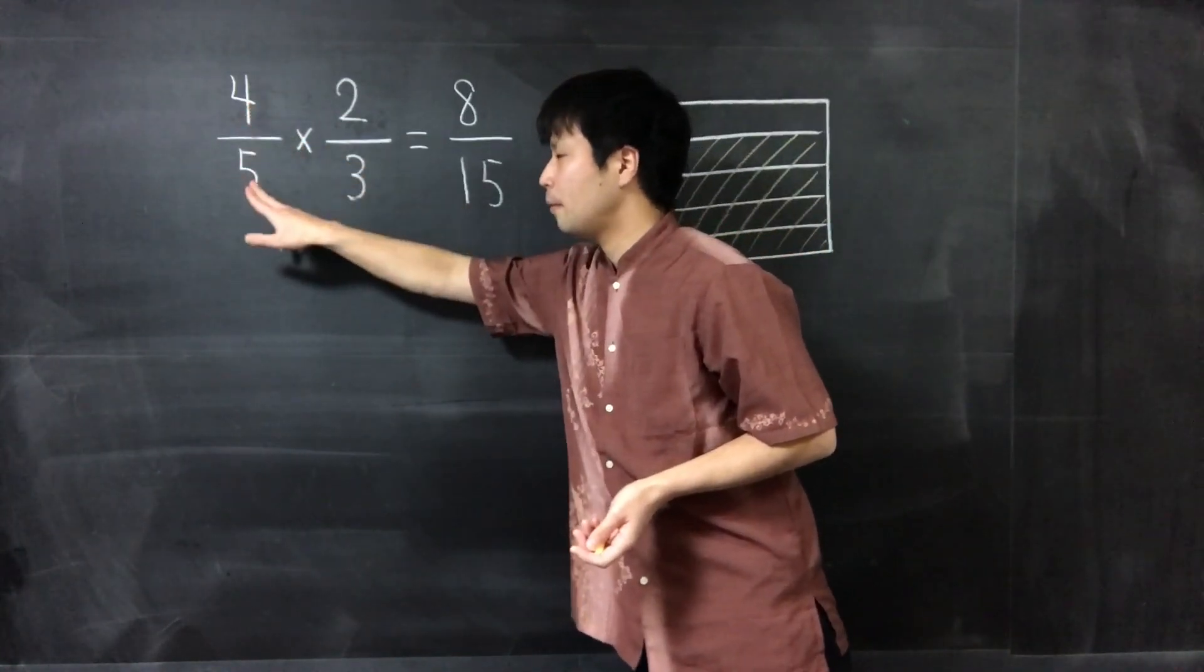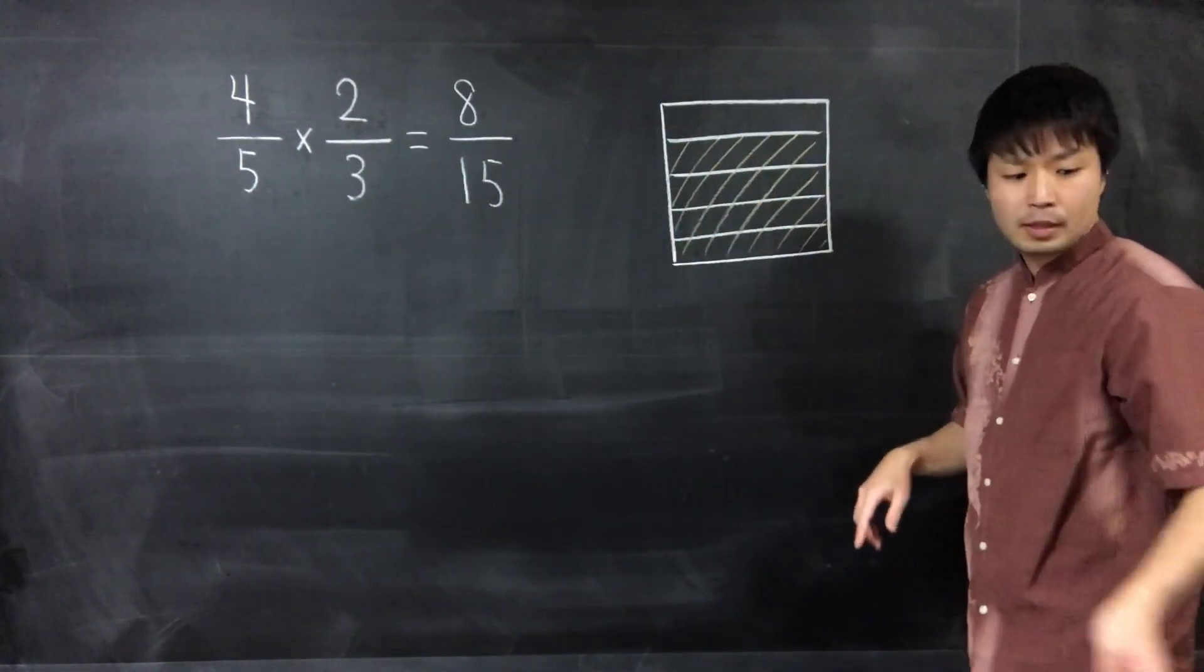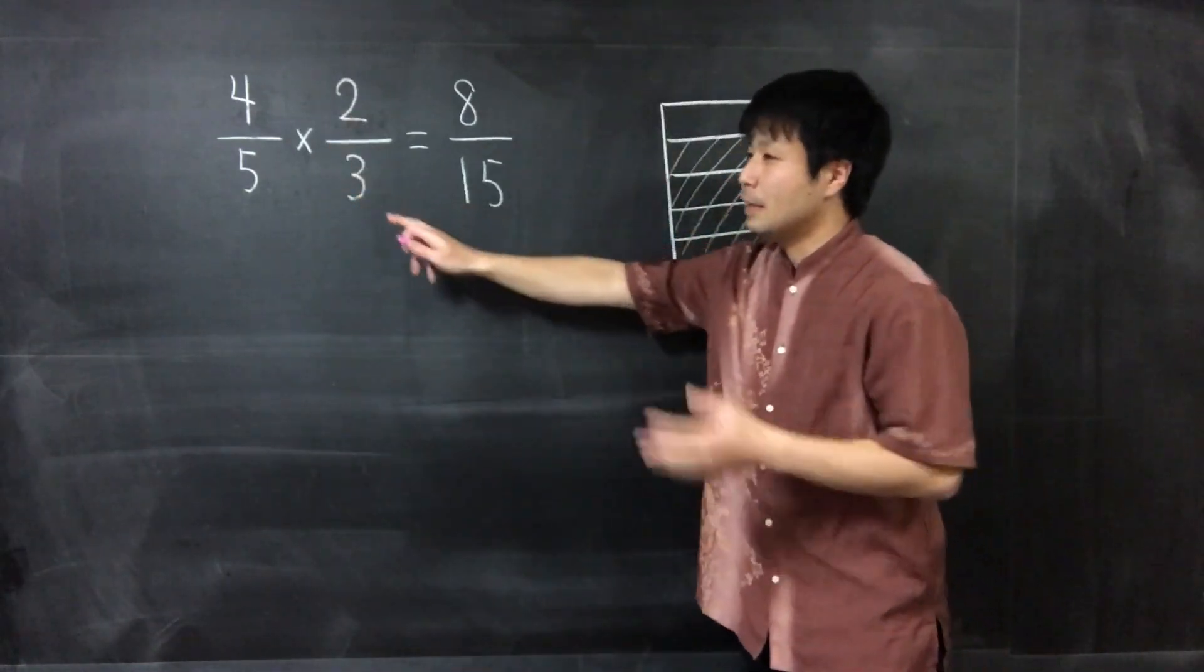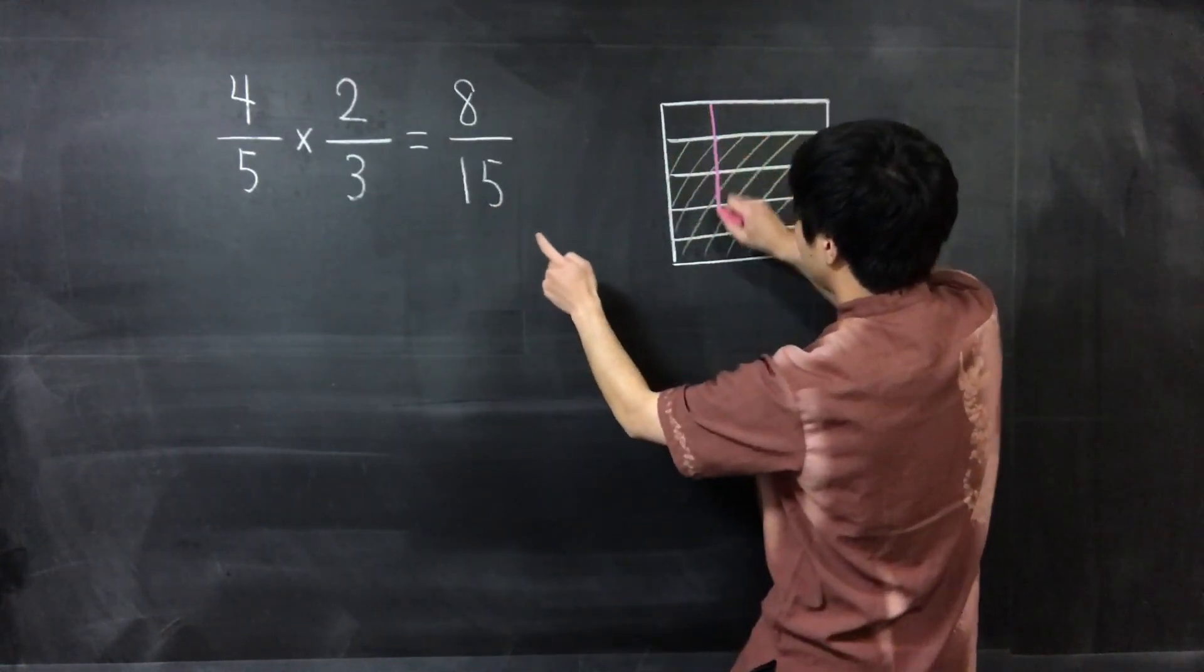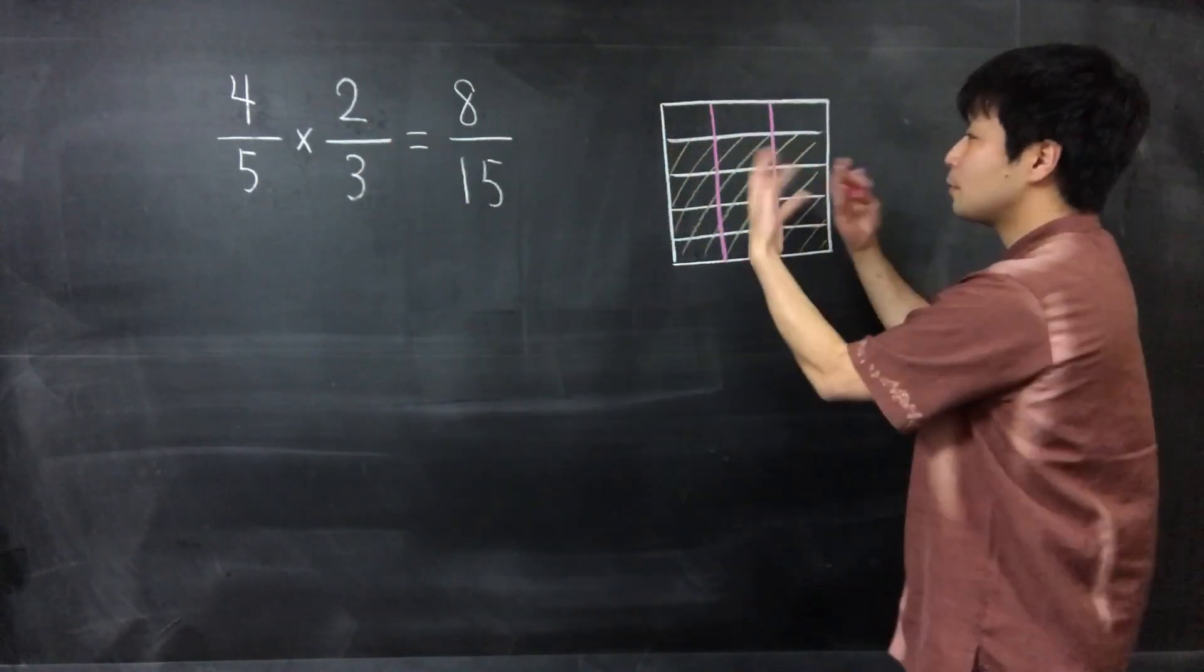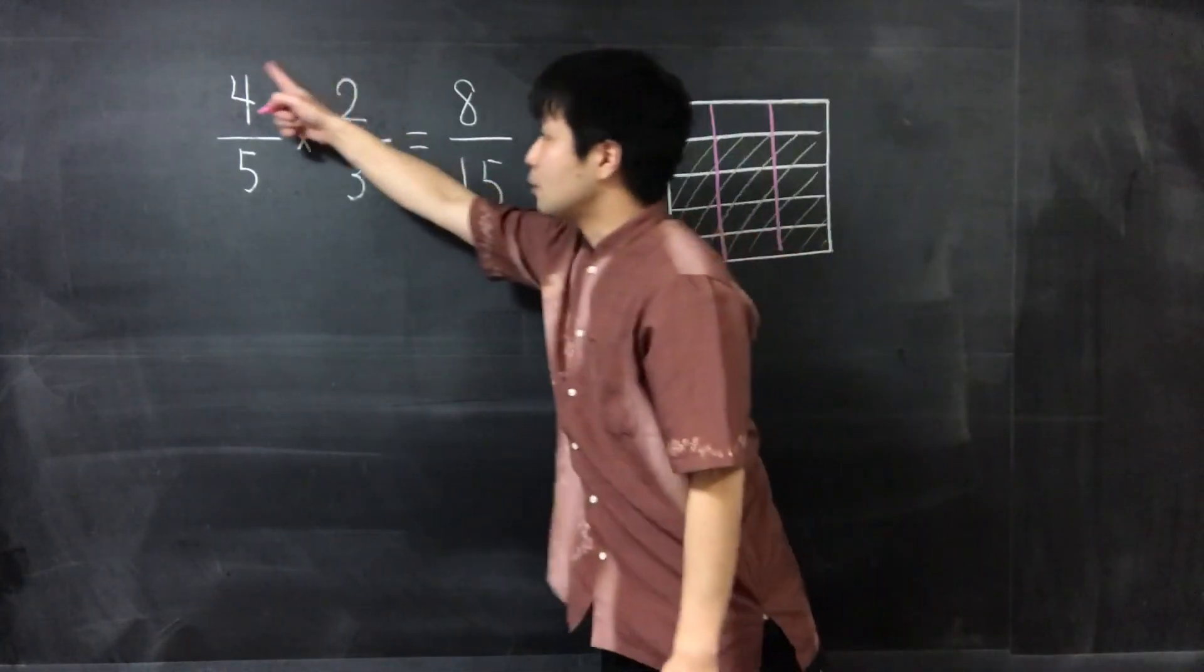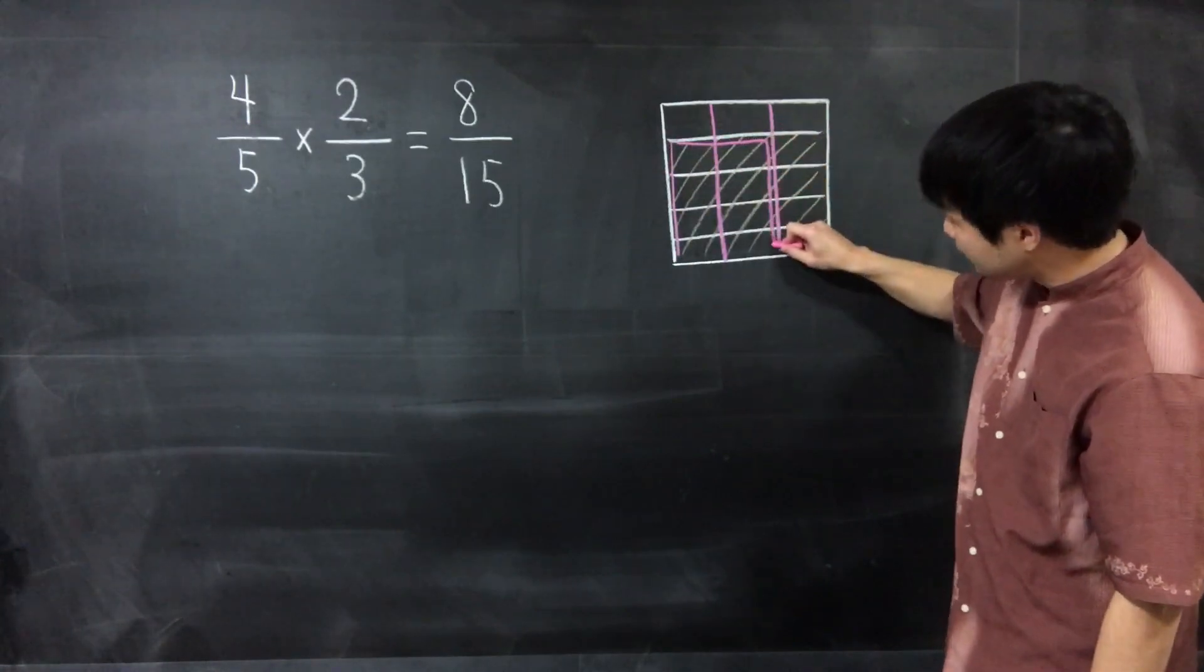Multiplying by 2 over 3 means divide this area into 3 and think of 2 of them. So this expression means this area.